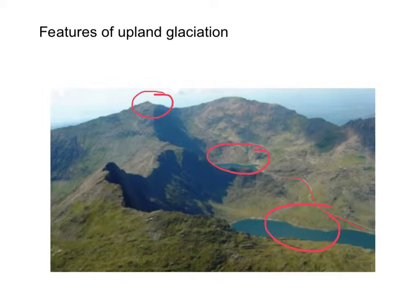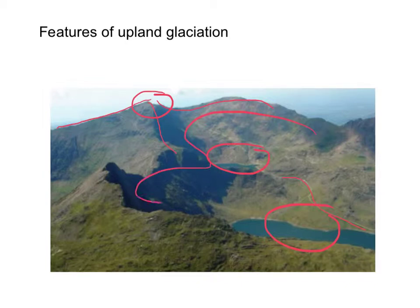Coming off of Mount Snowdon we can see three distinct aretes — there's one here, one here, and one here. It's actually a very nice photograph because you get a real sense of how the area to the north of the peaks has actually been gouged out by the action of snow and ice.